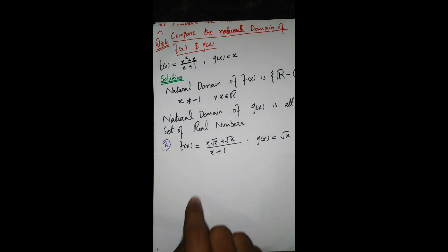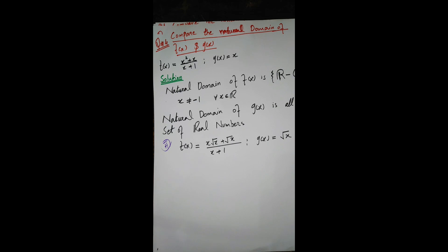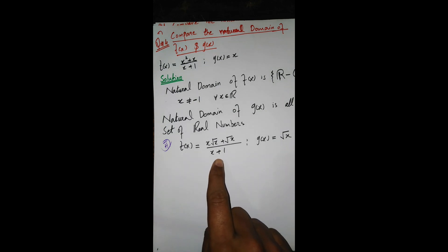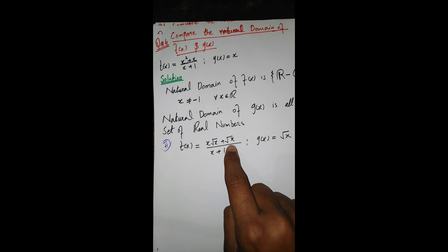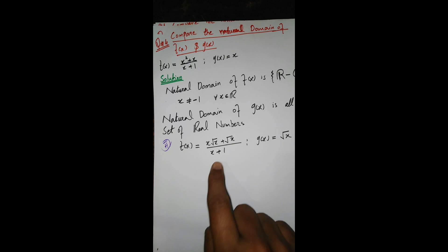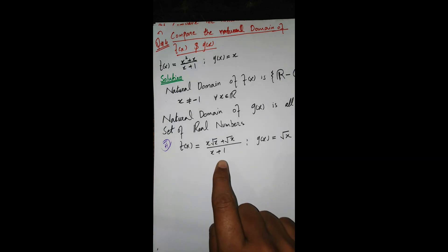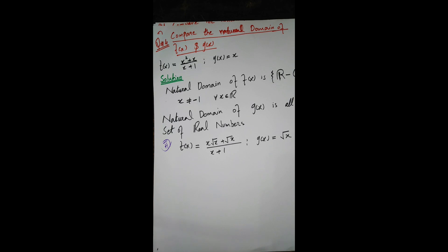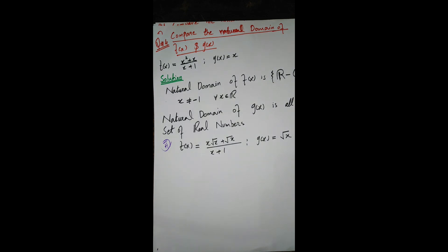For f(x), it is a fraction term that also includes a radical sign, so there are two restrictions at the same time. First, we cannot allow any input that makes the denominator zero. Second, we cannot allow any input that makes the term under the radical sign negative or complex. These two restrictions must be satisfied simultaneously.